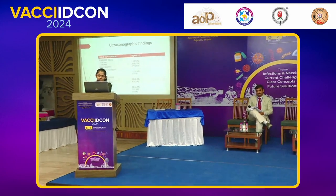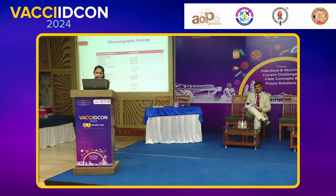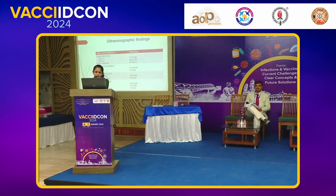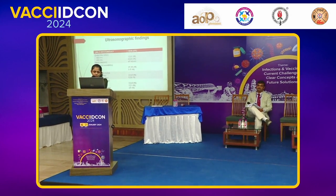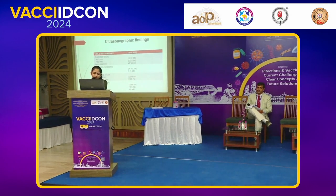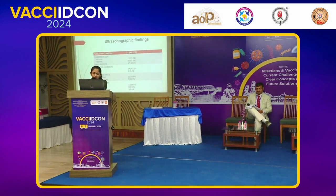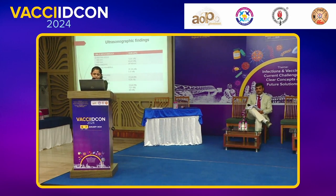In ultrasonographic findings, mild hepatomegaly is seen in 40% of cases. Right lobe involvement with a single, non-liquified abscess is more common, and the mean size of the abscess is 49 x 40 mm.